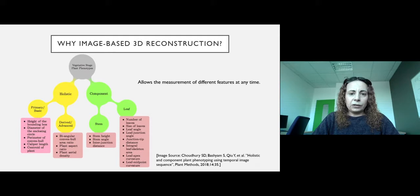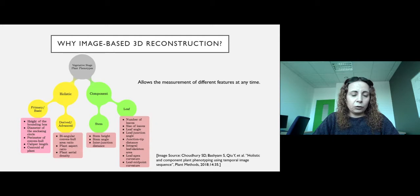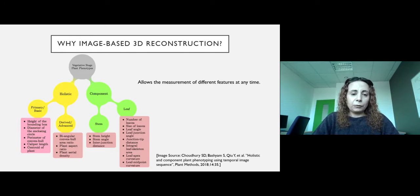Image-based 3D reconstruction methods allow the measurement of different features at any time. The features or traits we want to extract from the plant can be holistic or component-based. Holistic ones are like height of the bounding box or diameter of the enclosing circle of the plant. Component-based traits are properties of parts of the plants, like stem height, stem angle, or properties of leaves such as number of leaves, size of leaf, leaf angle, etc.